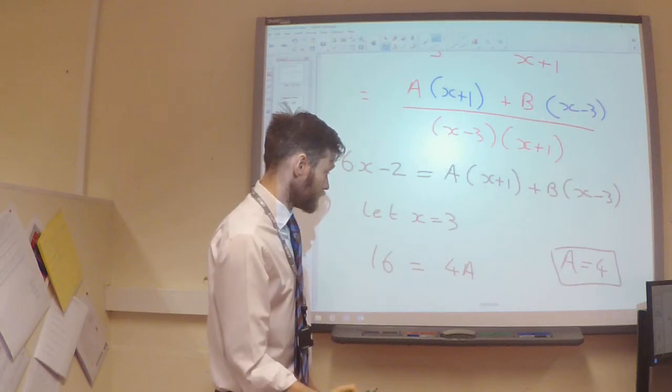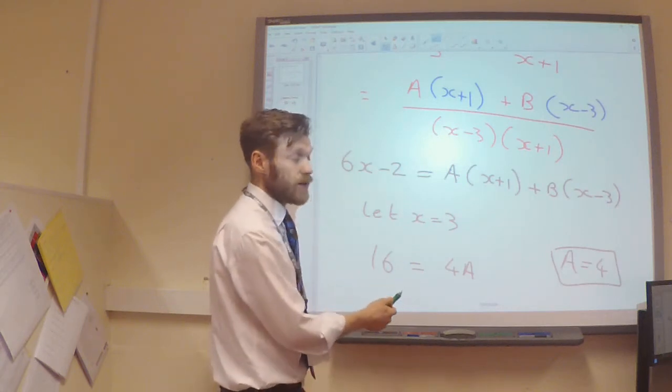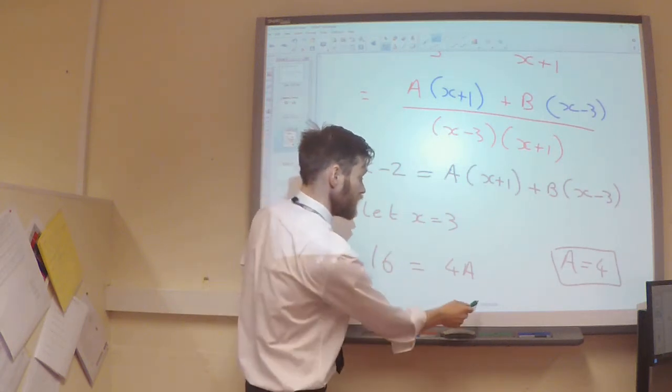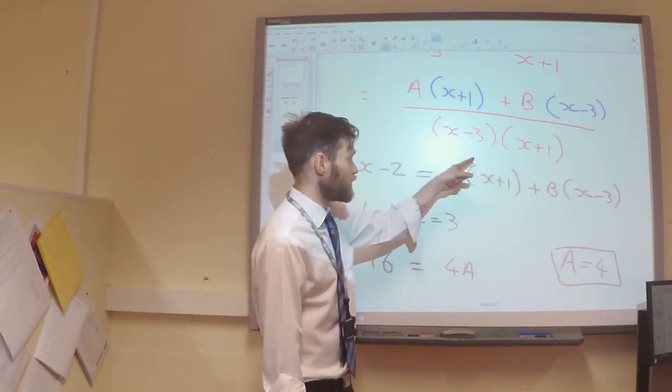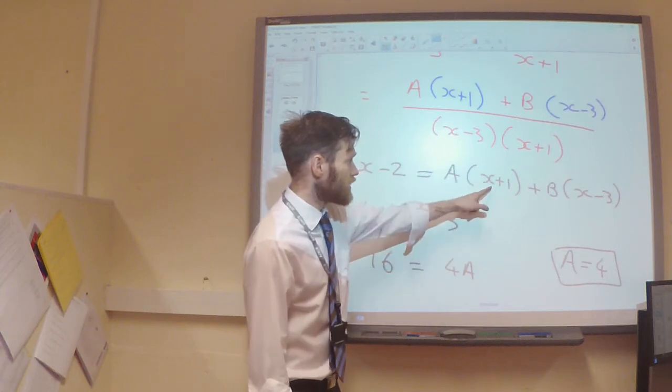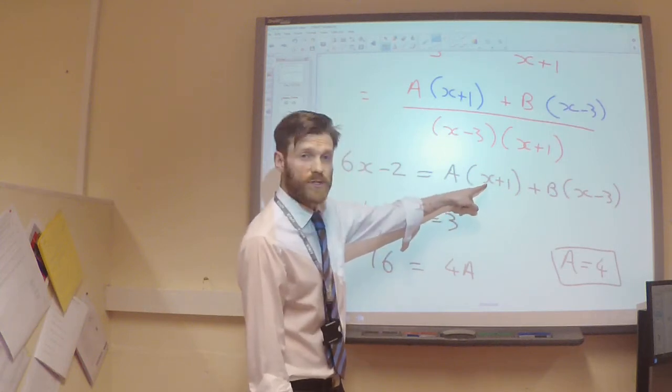I've got A, I now need to work out what B is going to be. So, for this one, I want the A to disappear. In order for this bit to disappear, I'm going to say, let x be equal to minus 1.